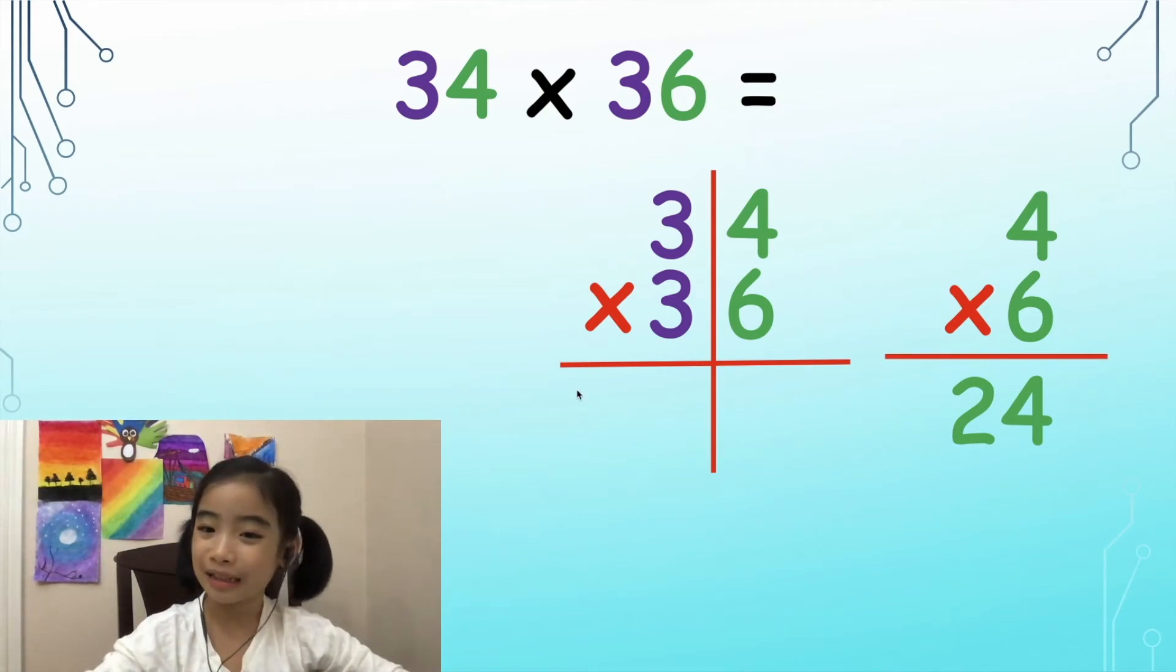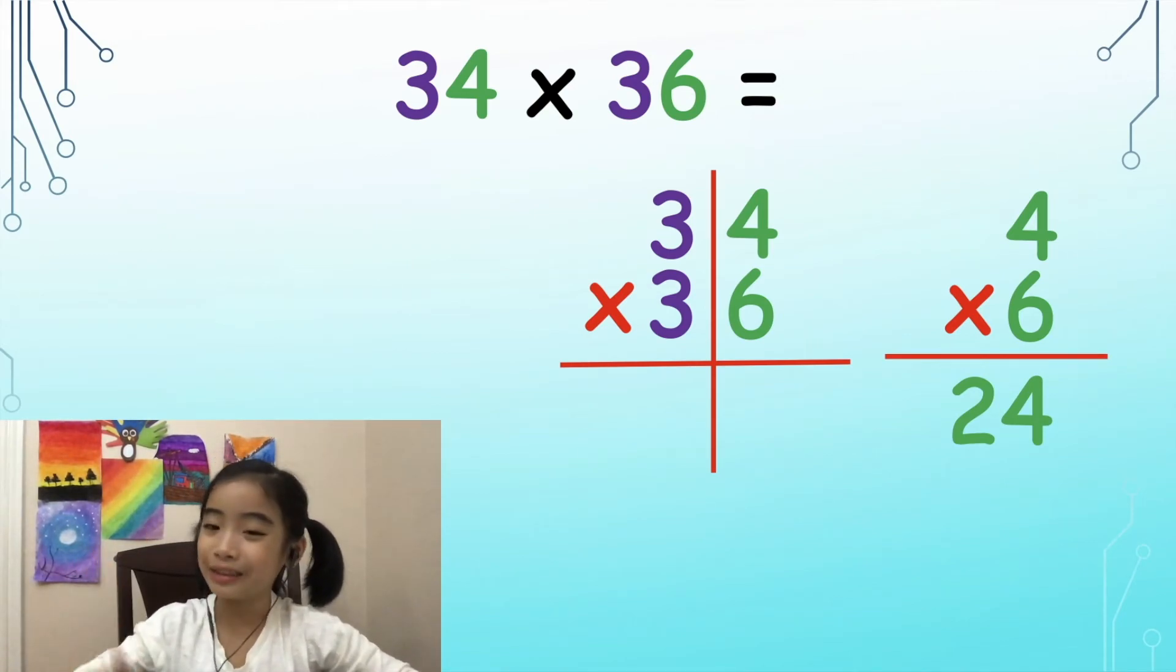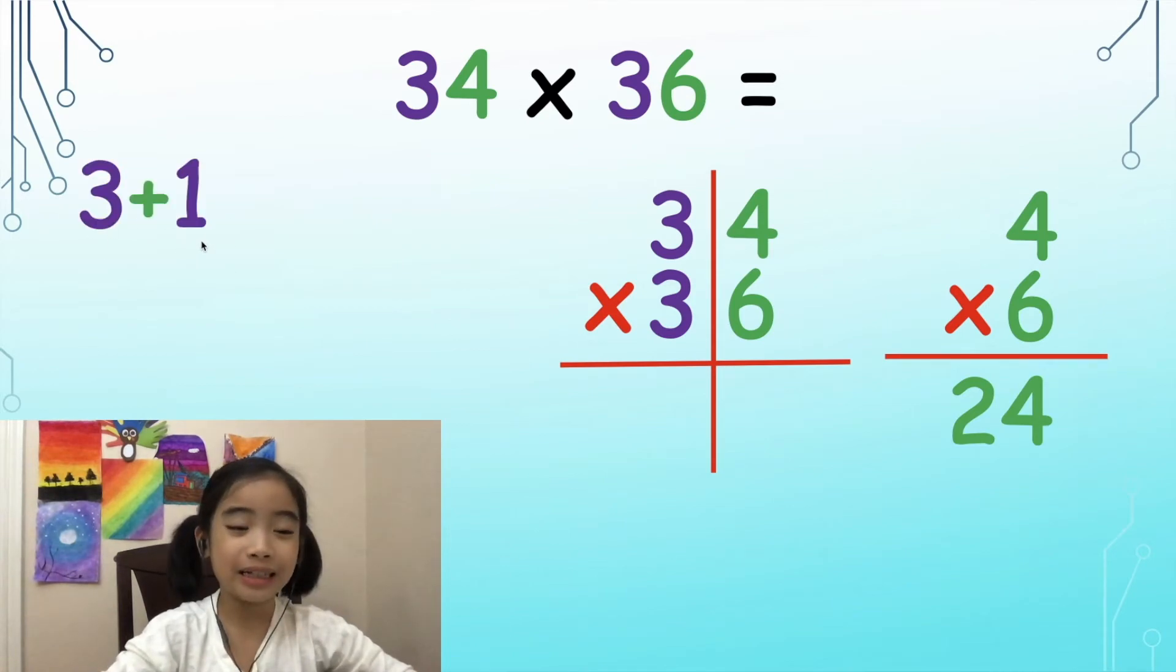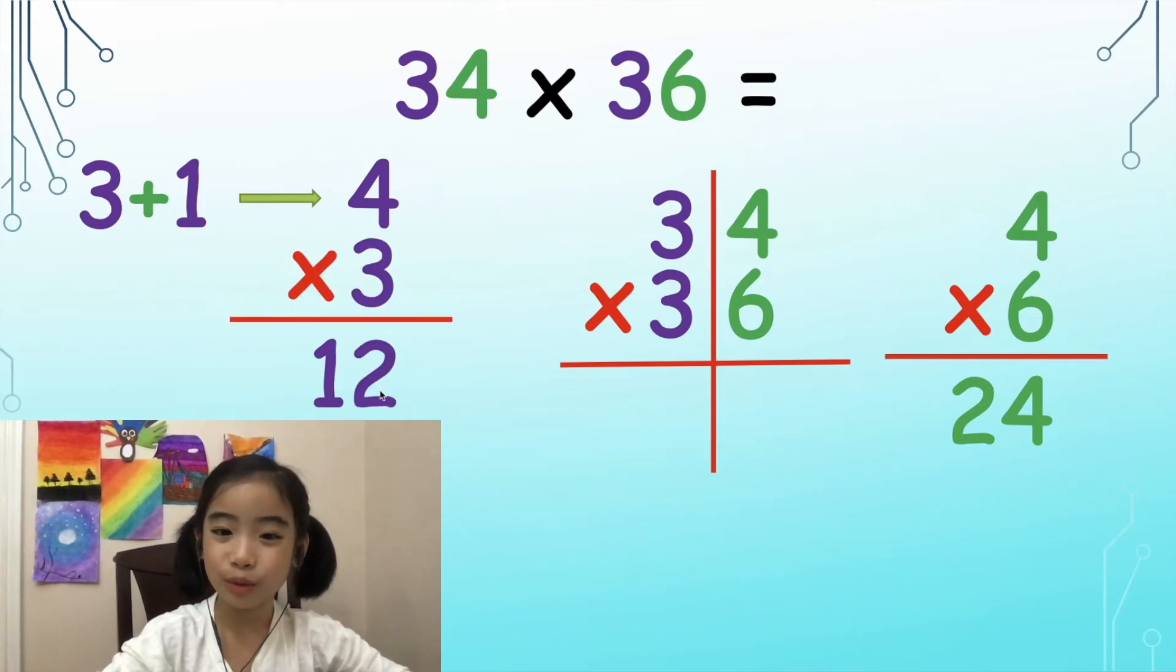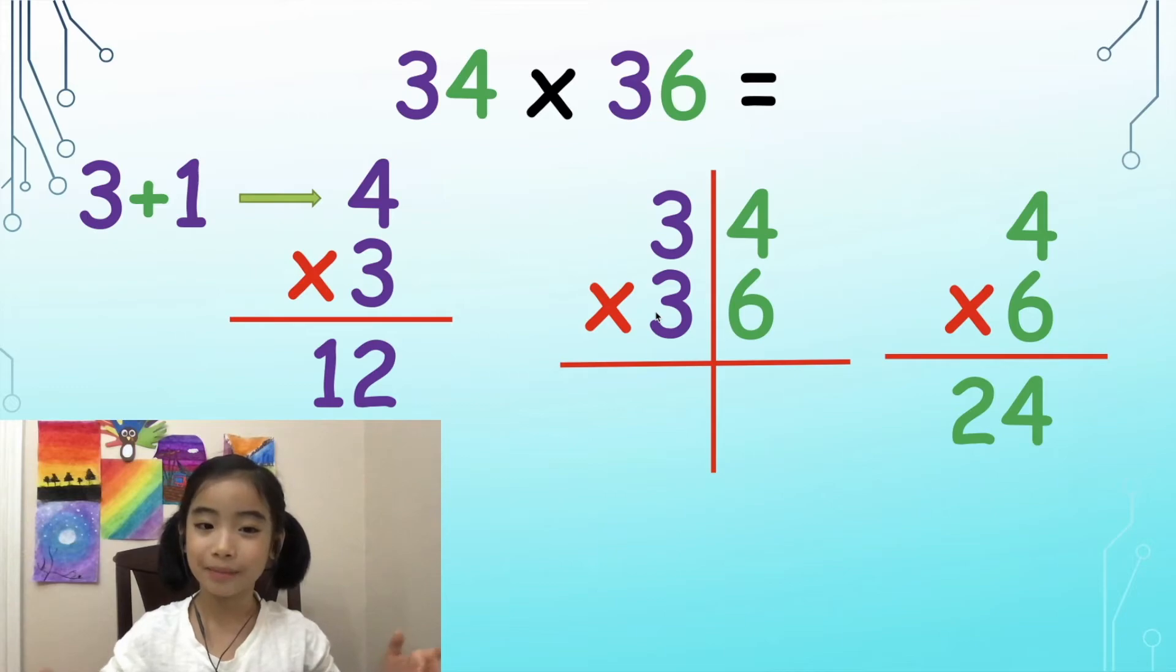Before we do the multiplication, we need to add 1 to the first number. 3 plus 1 equals 4. 4 times 3 equals 12. Now, let's put them together.